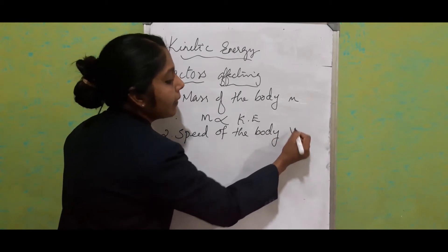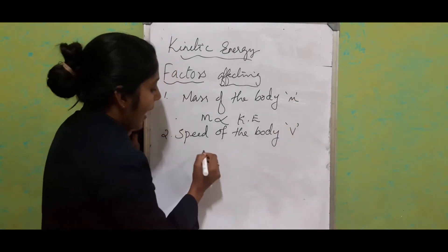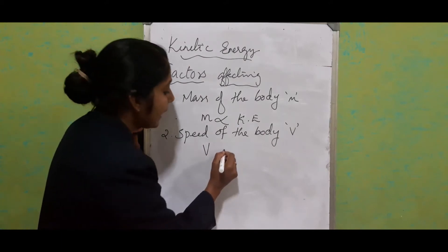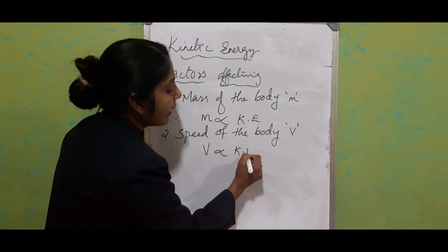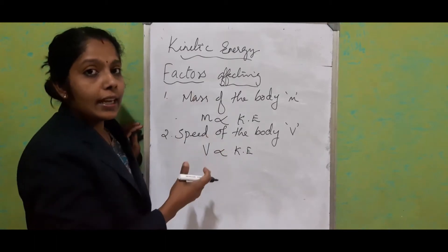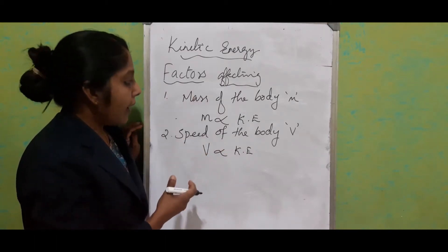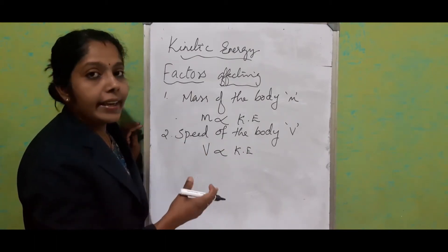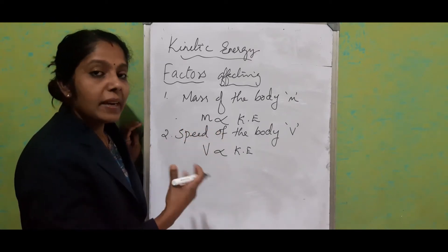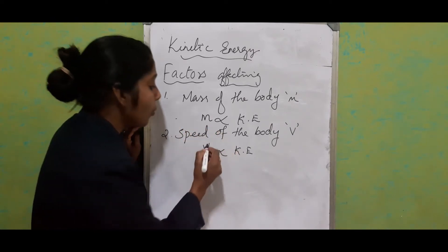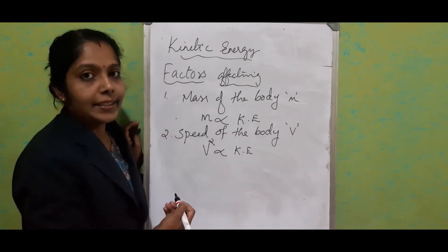V is also directly proportional to kinetic energy. More specifically, the square of the speed is directly proportional to kinetic energy. So mass and speed are the two factors which affect kinetic energy.